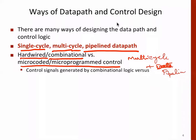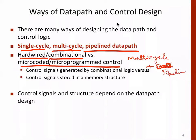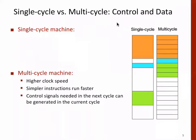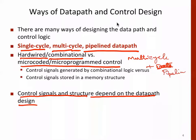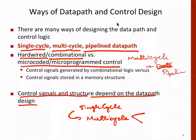Control signals and structure depend on the data path design. We have considered single-cycle data path design so far, and now we are moving into multi-cycle. Multi-cycle is of two kinds: without pipeline and with pipeline. Note that single-cycle design is not in use — it's not very efficient, so no processor is designed using single-cycle. Similarly, multi-cycle without pipelining is also not in use. All processors are designed with a pipeline.